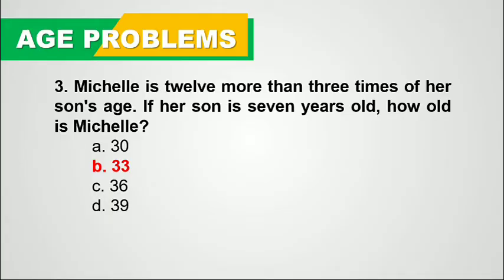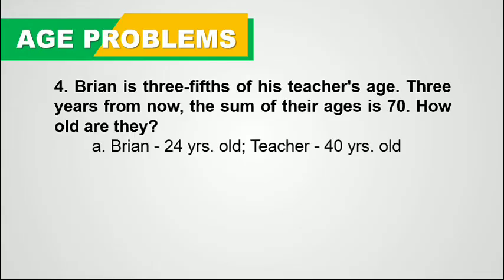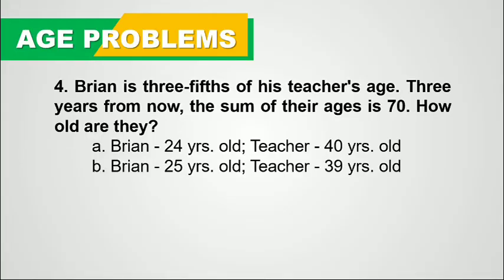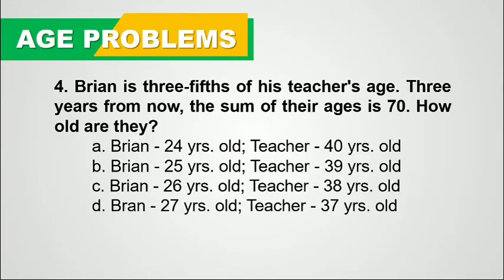Let's have one more age problem. Brian is 3 fifths of his teacher's age. Three years from now, the sum of their ages is 70. How old are they? Is it letter A — Brian is 24 while his teacher is 40? B — Brian is 25 while his teacher is 39? C — Brian is 26 while his teacher is 38? Or D — Brian is 27 while his teacher is 37? (Note: the name is Brian, not Brant.)